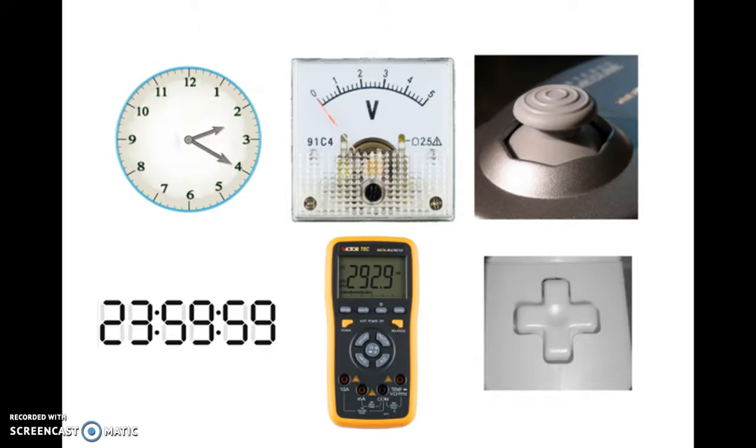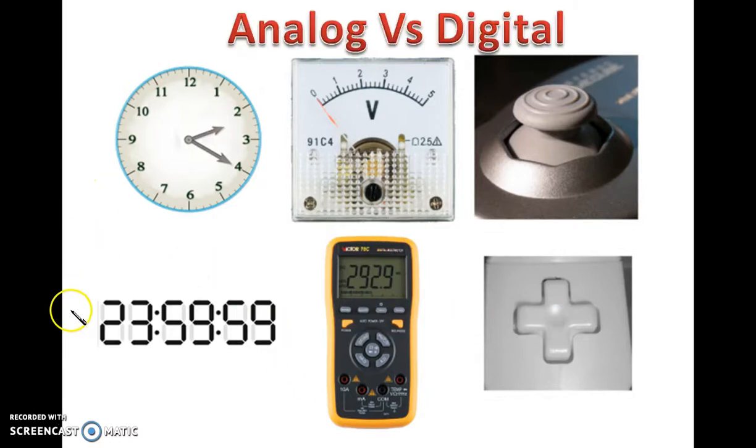In a digital signal, what we will be doing is we are discretizing the system. And with respect to time, we are having no continuous form of signals. So, this is the very basic fundamental difference between analog and digital devices.